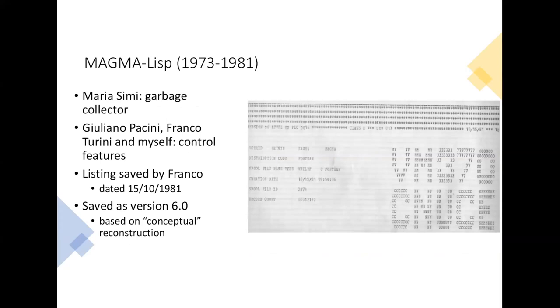The saved code has been done by four authors. Maria Simi, who was then a student, developed the garbage collector. Giuliano Pacini, Franco Turini, and myself developed the control features. What you see there is the back of the two-inch listing that was saved by Franco Turini. He gave it to me a few years ago. So it's now in my possession, but I think I will deliver it to the Computing Machinery Museum.